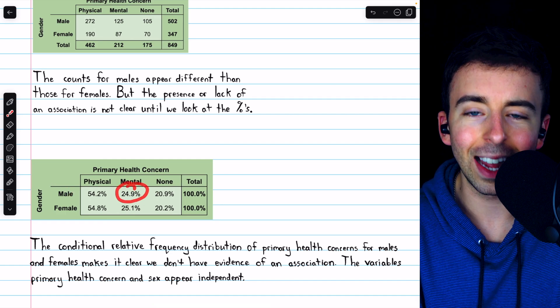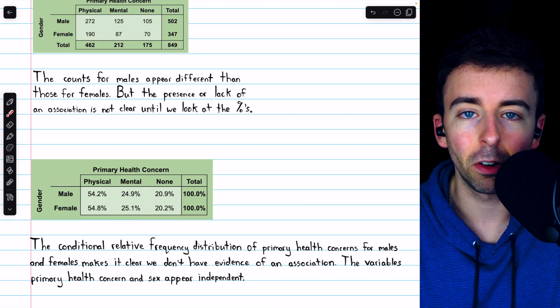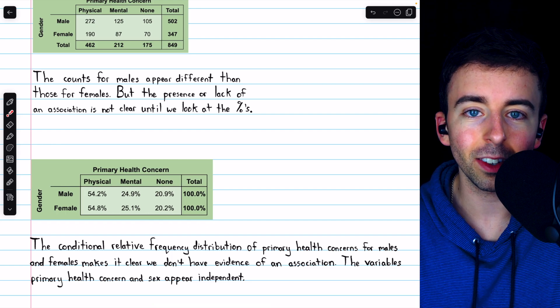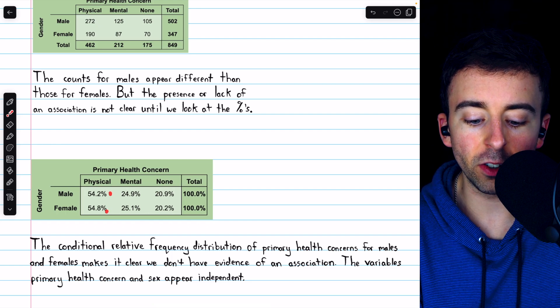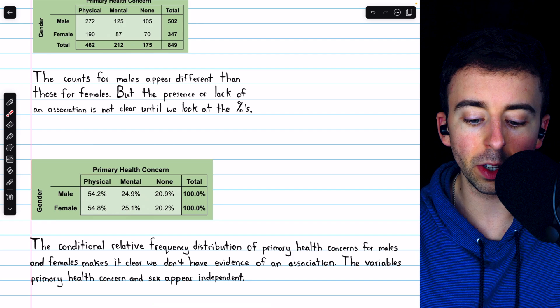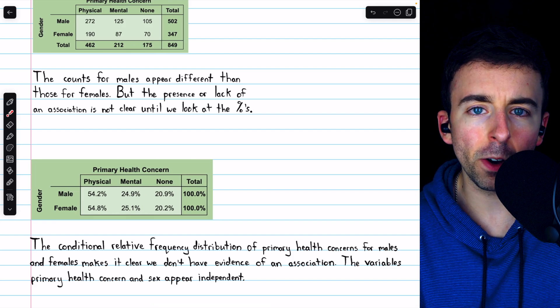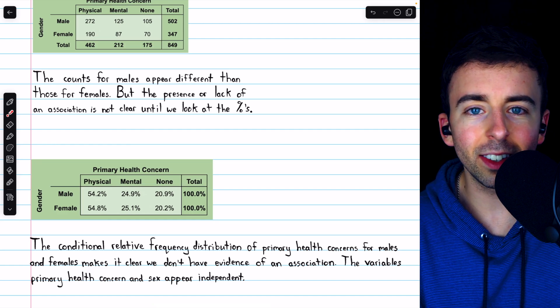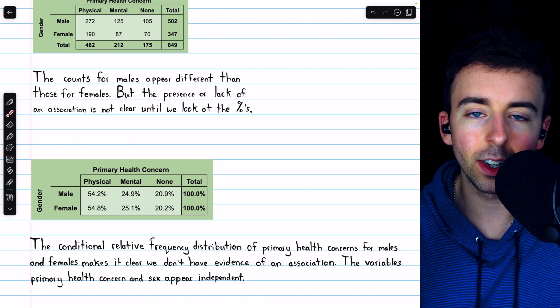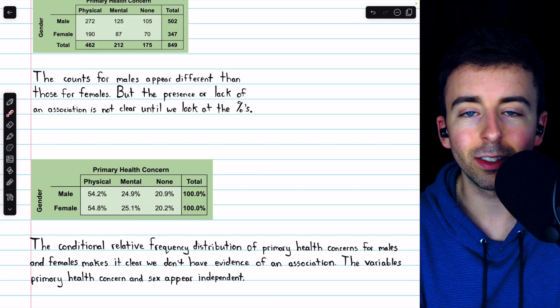Now you might be thinking, these percentages, 54.2 versus 54.8, 24.9 versus 25.1, these are different. So how do we decide how much is different enough to be evidence of an association?